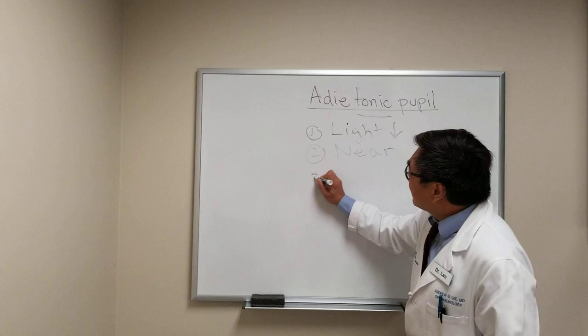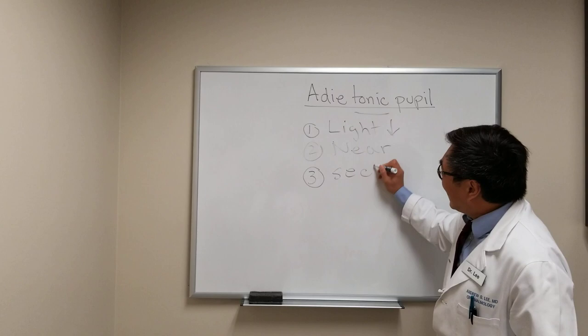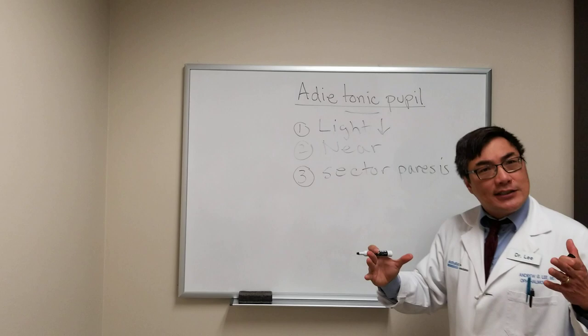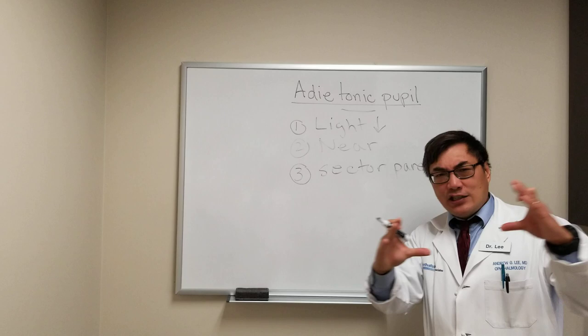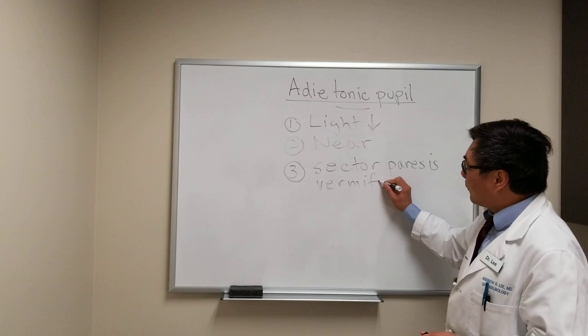When you have a unilateral or bilateral Adie's tonic pupil, what we're looking for is a sector paresis. One part of the iris might be paralyzed while the other parts can still move. The parts that still move have hippus — the normal change in reactivity of the pupil — and that can look like a worm-like, vermiform movement in the pupil.